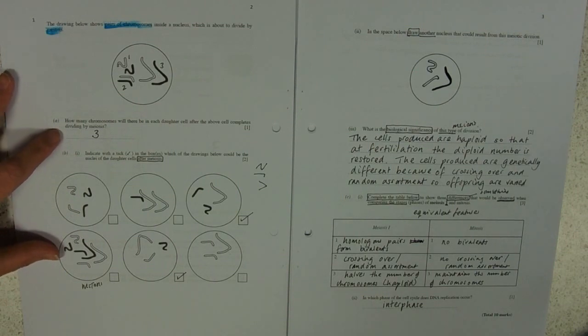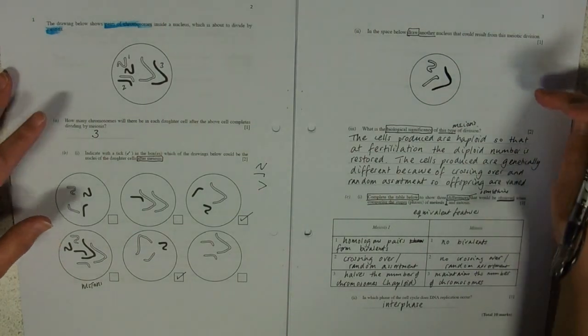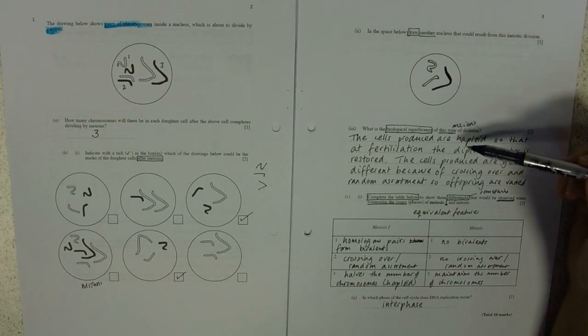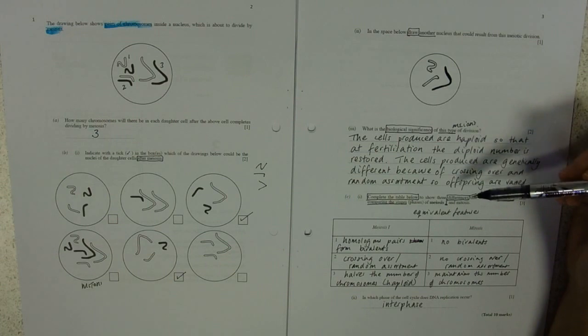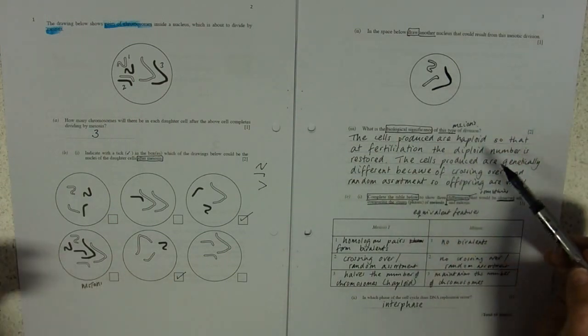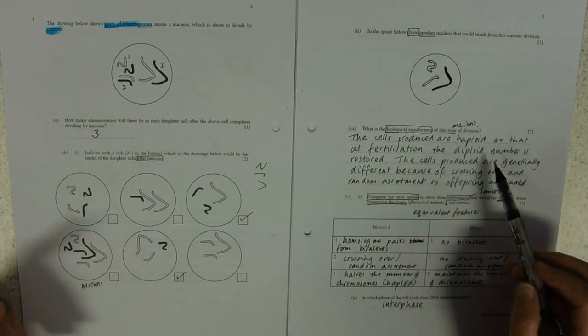So these two, you're interpreting diagrams, you're interpreting information, showing understanding. AO2, AO2, AO2 again. These, you're doing an explanation of the significance, so one for knowing what it is, AO1. One for being able to explain the significance, AO2.